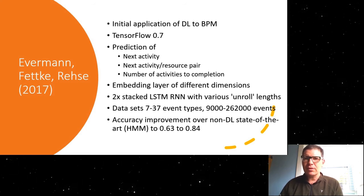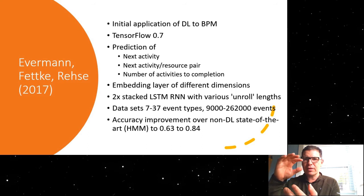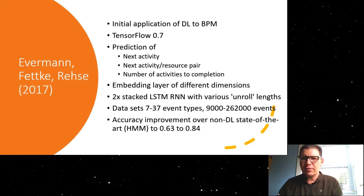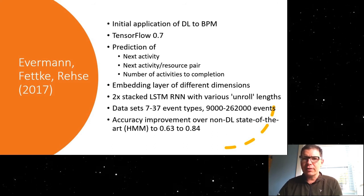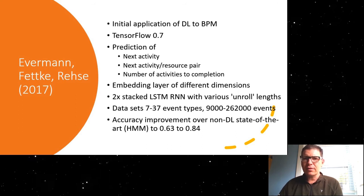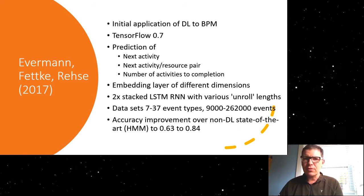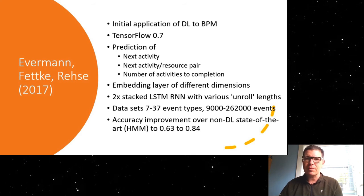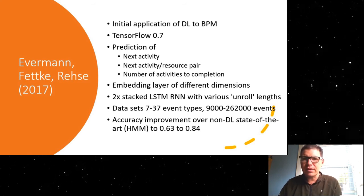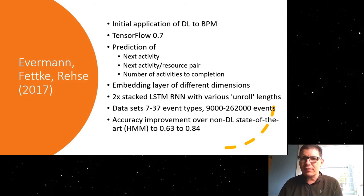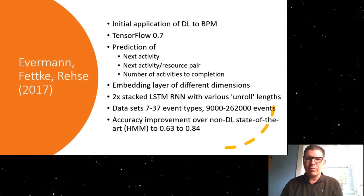So what we did was we took an LSTM RNN network, a recurrent neural network with LSTM blocks. We stacked two LSTM blocks, one on top of the other, and then unfolded this at various unroll lengths or unfolding lengths. We used an embedding layer to encode the different activity types, and we trained this on different data sets, or we applied this to different data sets, ranging anywhere between 7 and 37 different event types, and for a training set size of anywhere between 9,000 and 262,000 events there. And what we showed in that research was that we could significantly improve the prediction accuracy over the then state-of-the-art, which was a non-neural network, non-deep learning approach based on hidden Markov models or hidden Markov chains there.